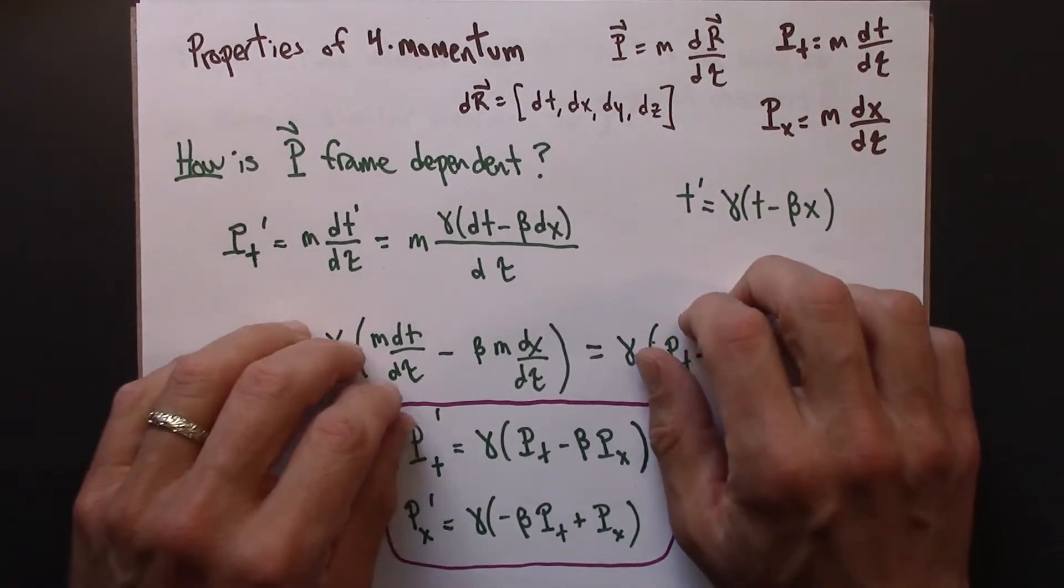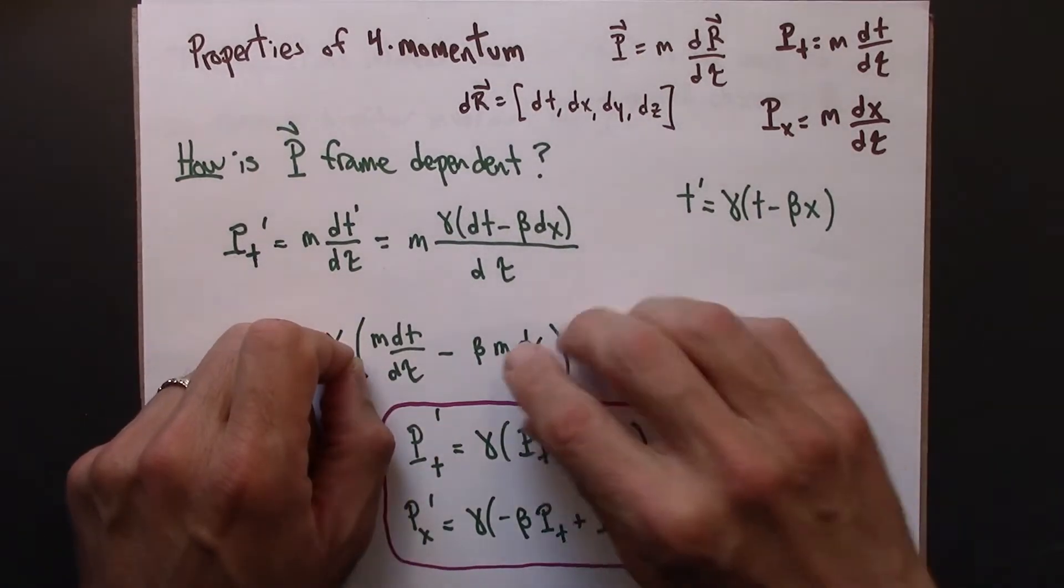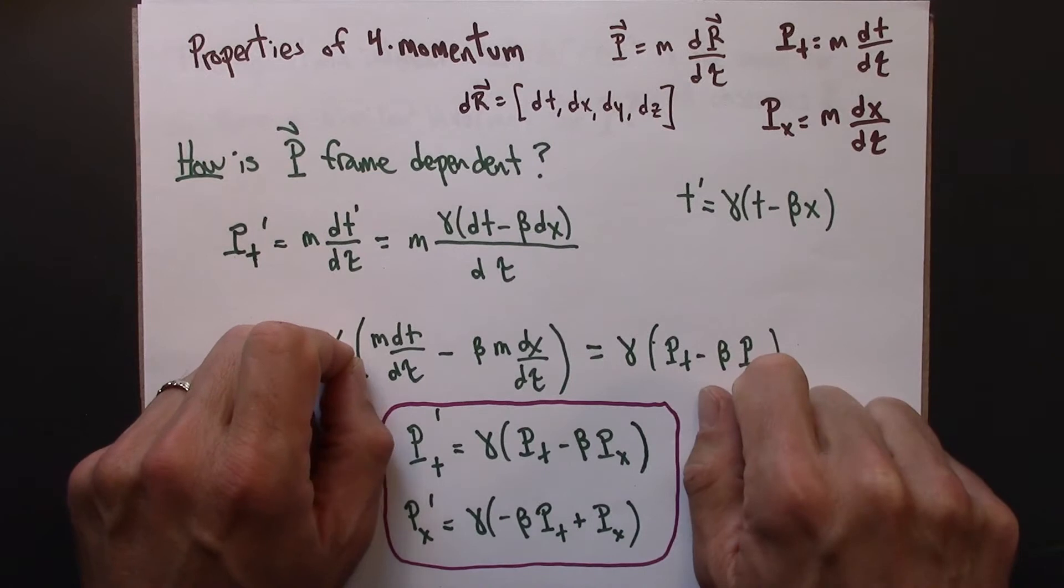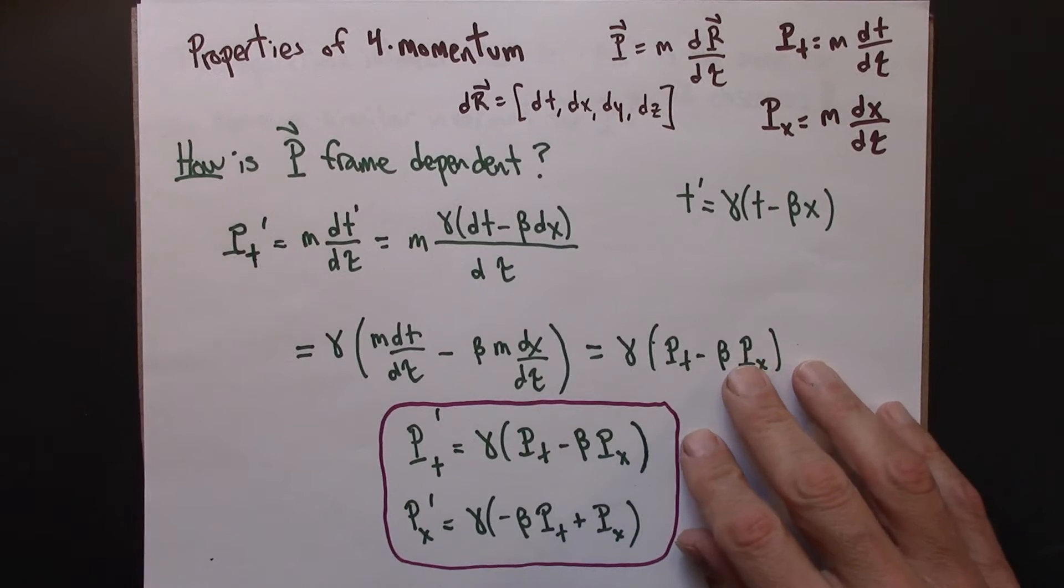Similarly, if you have the momentum of an object at a particular time in one reference frame, you can transform that to figure out what that looks like in another reference frame by following the Lorentz transformations. It's the same transformation.